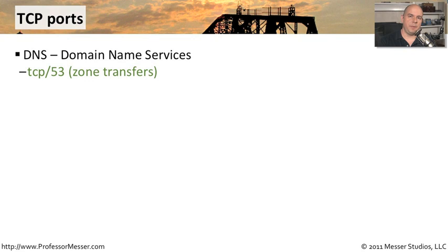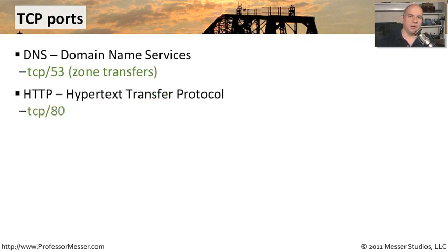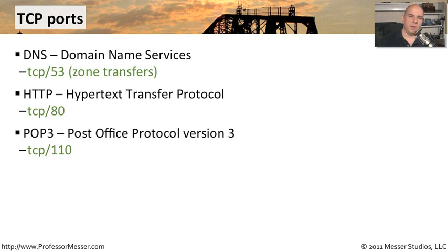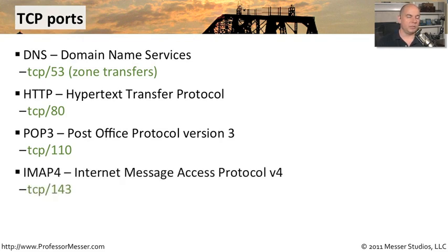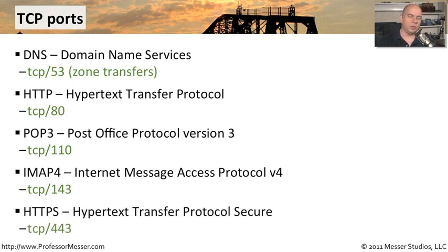DNS uses both TCP and UDP port numbers. When doing DNS lookups from your computer, it's the UDP side, but zone transfers between DNS servers use TCP port 53. HTTP — the web server running the Hypertext Transfer Protocol — uses TCP port 80. POP3 (Post Office Protocol version 3) for retrieving mail generally uses TCP port 110. IMAP4 (Internet Message Access Protocol version 4) uses TCP port 143. And encrypted web communication uses TCP port 443.